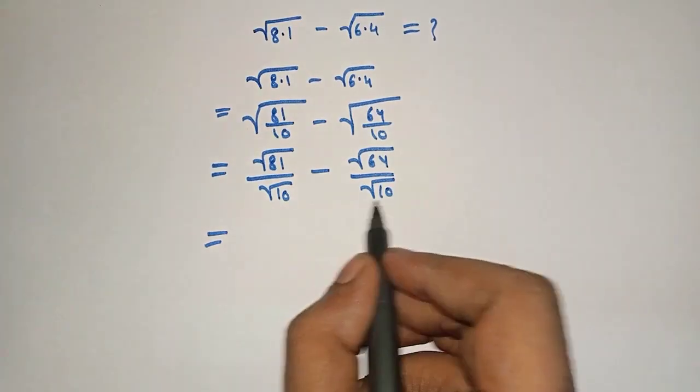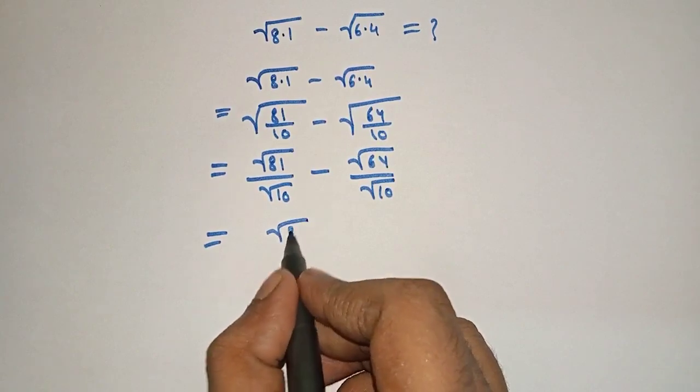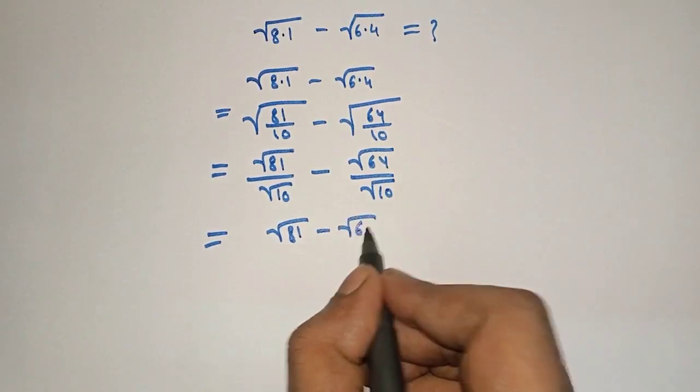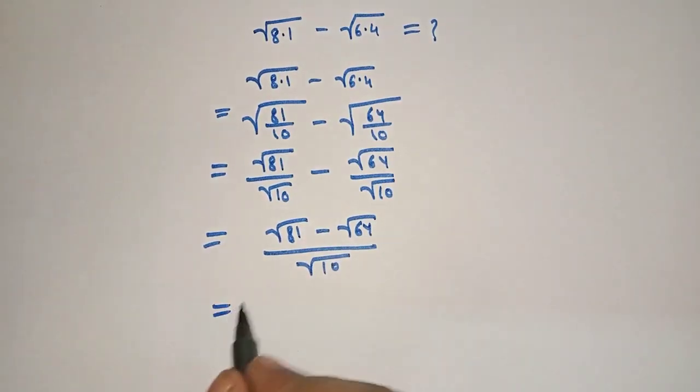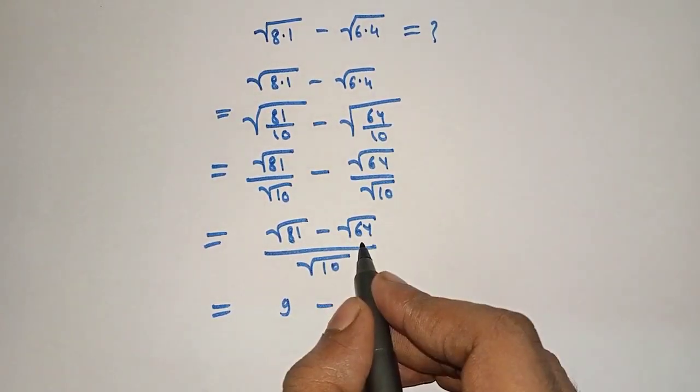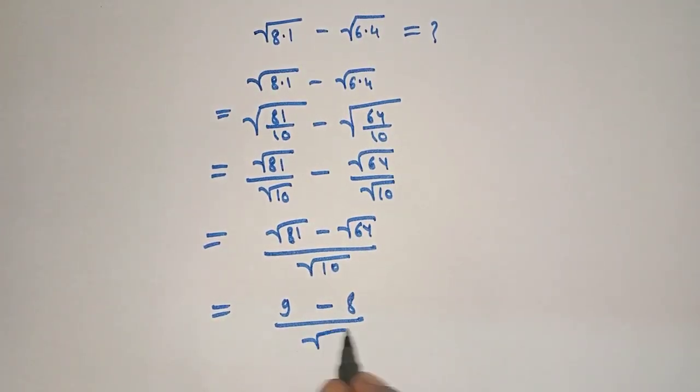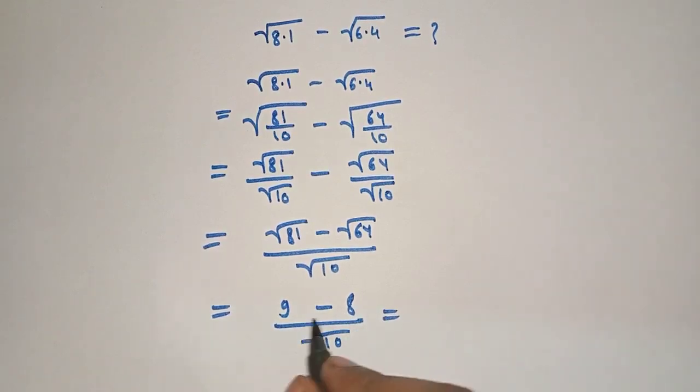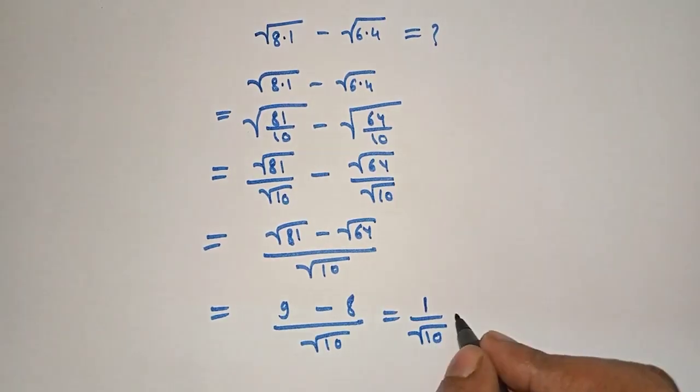Here the denominator is the same, so we will subtract: root 81 minus root 64 by square root of 10. What is root of 81? 9. Minus root of 64? 8. Divided by root 10, which equals 1 by square root of 10. Now we will rationalize it by multiplying by under root 10.